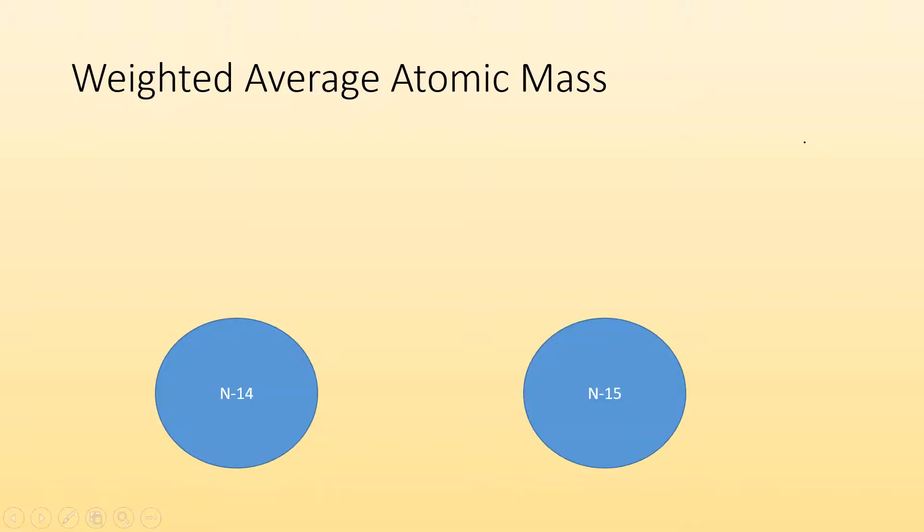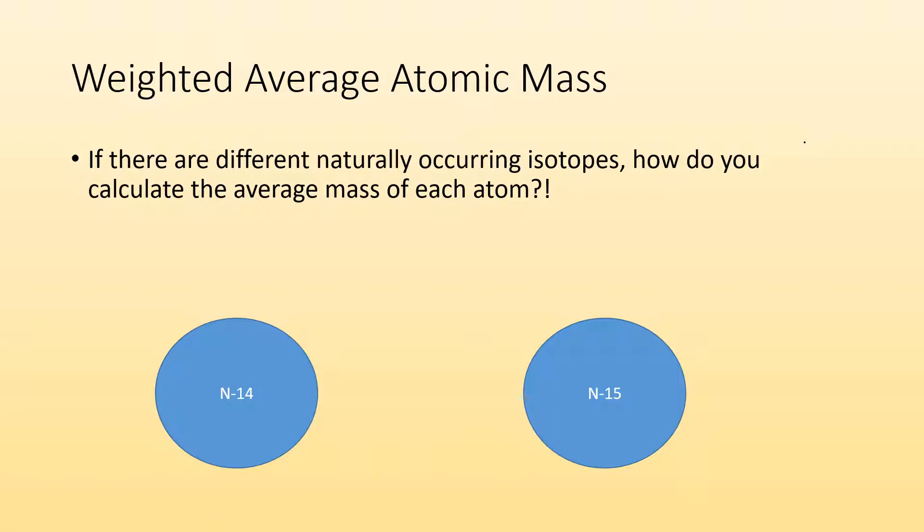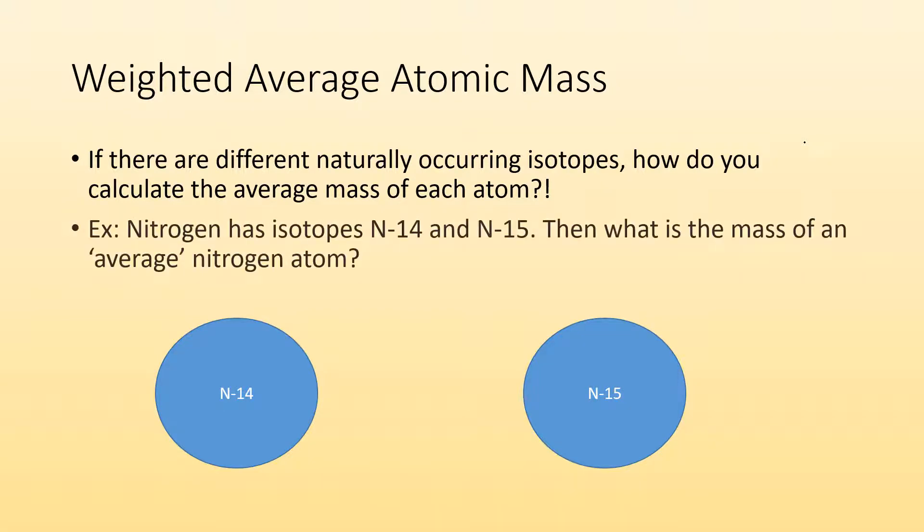So weighted average atomic mass, what are we talking about? If there are different naturally occurring isotopes, how do you calculate the average mass for each element? Nitrogen has two isotopes that occur naturally, nitrogen with a mass of 14 and nitrogen with a mass of 15. If I were to just pluck out an average random nitrogen atom, what could I expect the mass to be? What would be the average mass?